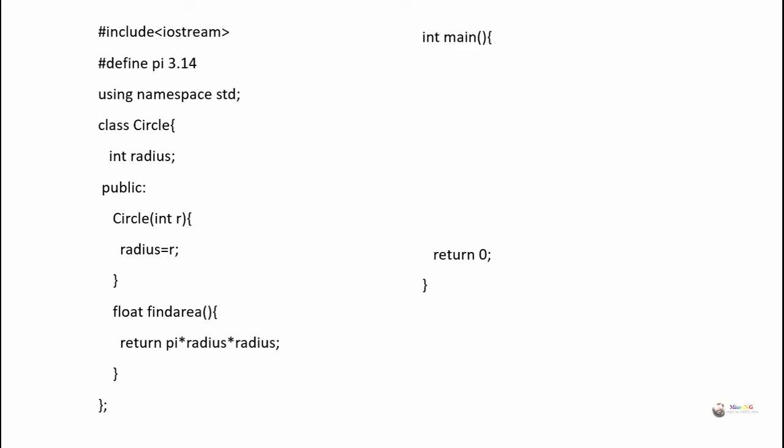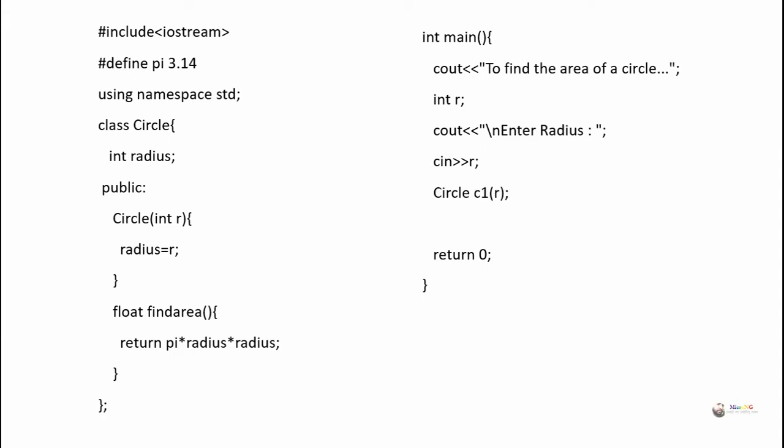In the main method, we first accept the value of radius from the user into a variable named r. A variable of int type r is declared and we use cin to accept its value. Using this value we create an object for the Circle class — Circle c1(r) — so r is passed to the constructor and radius is initialized. Using object c1 we call find_area: c1.find_area(). The result returned is displayed using a cout statement.